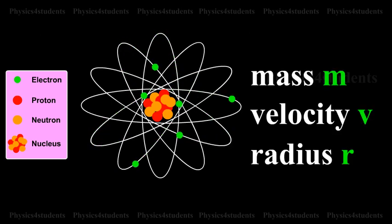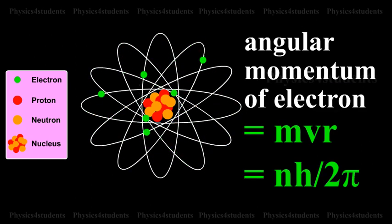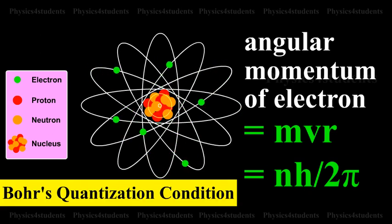If m and v are the mass and velocity of electron in a permitted orbit of radius r, then angular momentum of electron is equal to mvr = nh/2π, where n is called the principal quantum number and has the integral values of 1, 2, 3 and so on. This is called Bohr's quantization condition.